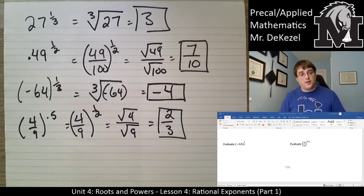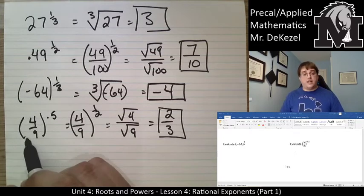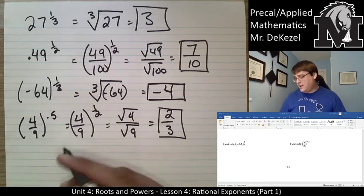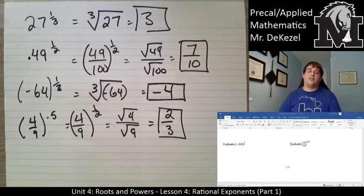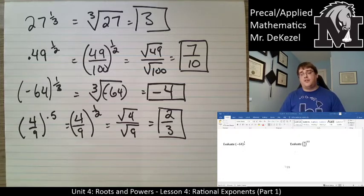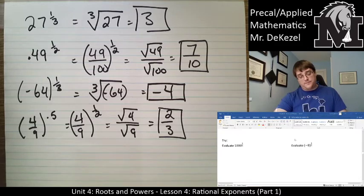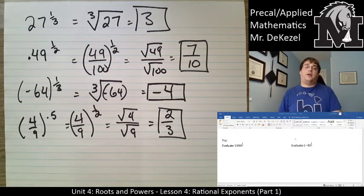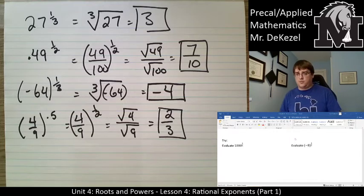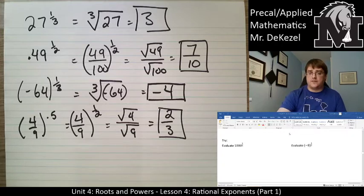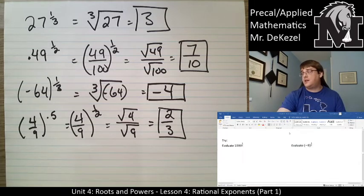Sometimes something will look daunting, but when you take a couple of steps, you see there are pieces of it that you know. Four and nine are very common numbers for us. 64, 49, 27, and 100 are all numbers that we should be able to square root or cube root fairly easily at this point in the course. If you can't yet, no problem — just keep practicing. So there are some try-it-on-your-owns. You can try those four on your own, then hit play and we'll go through them. Go ahead and pause wherever you need to, then we'll do them together.